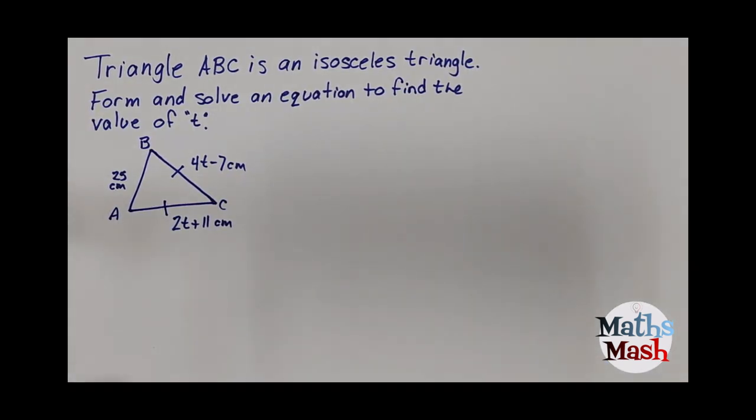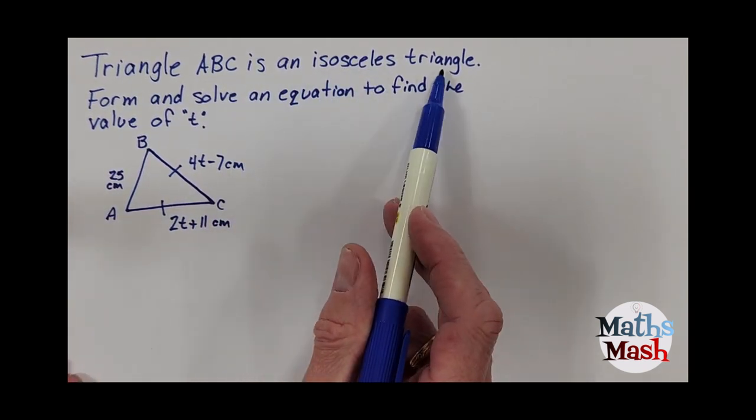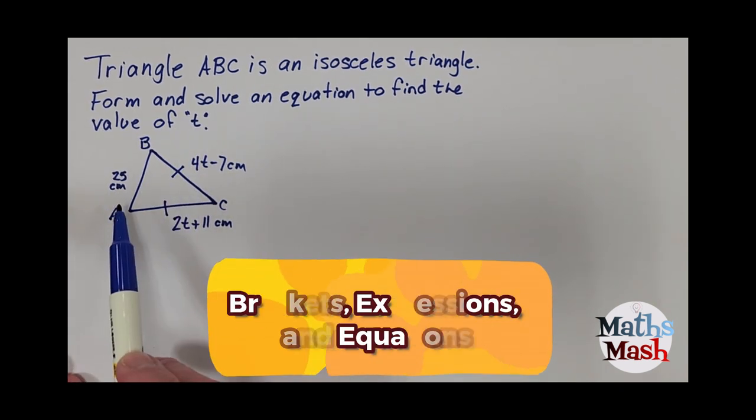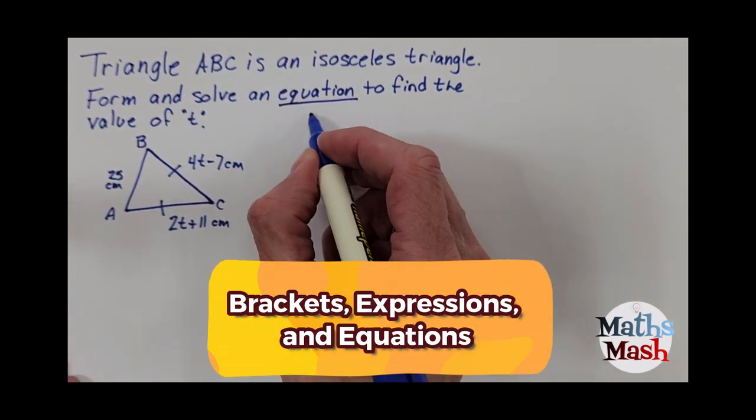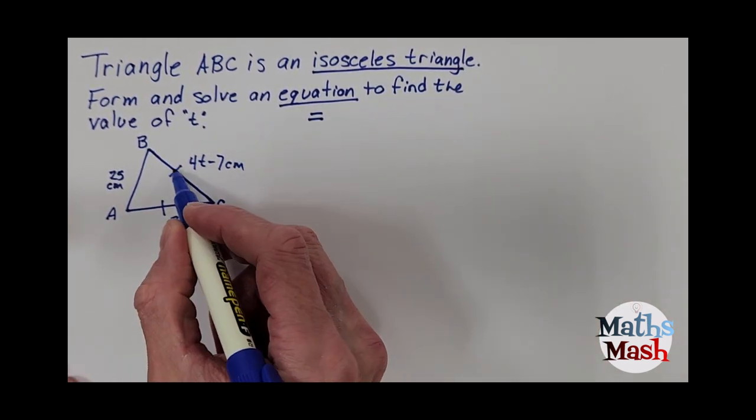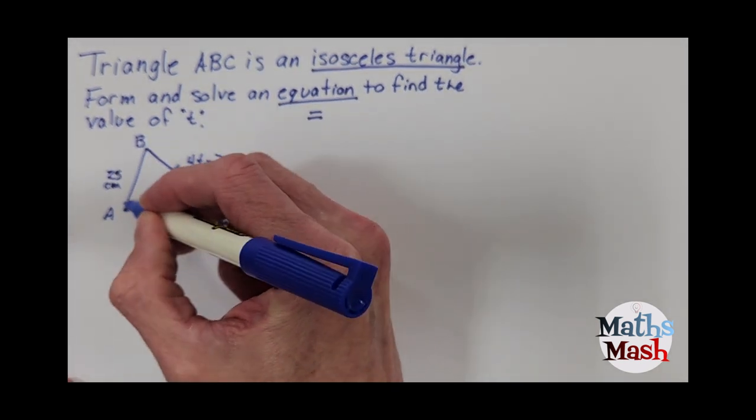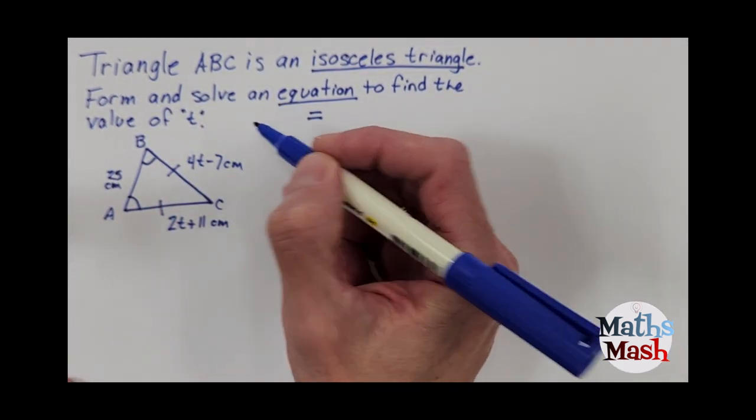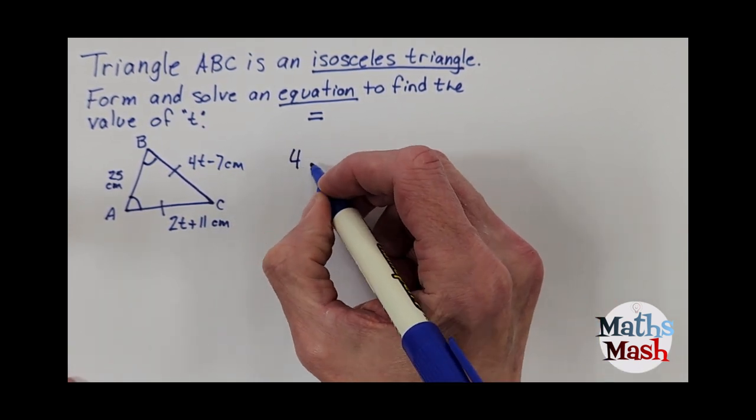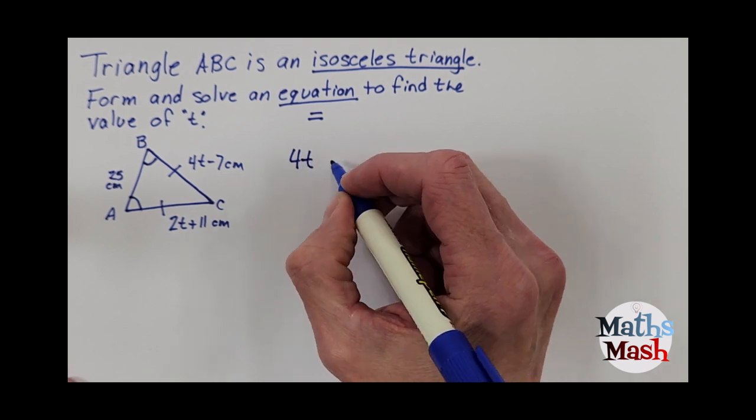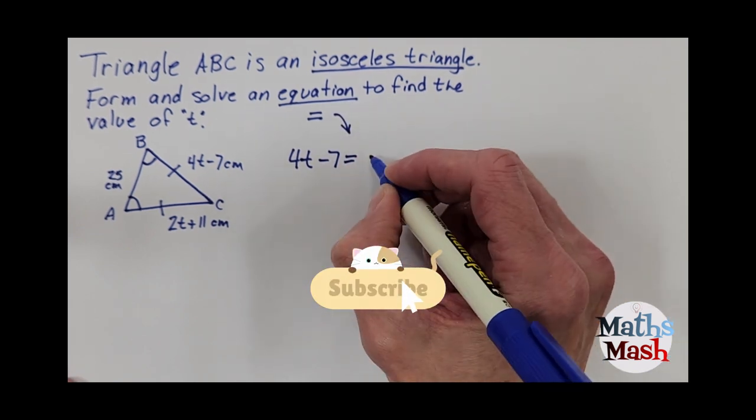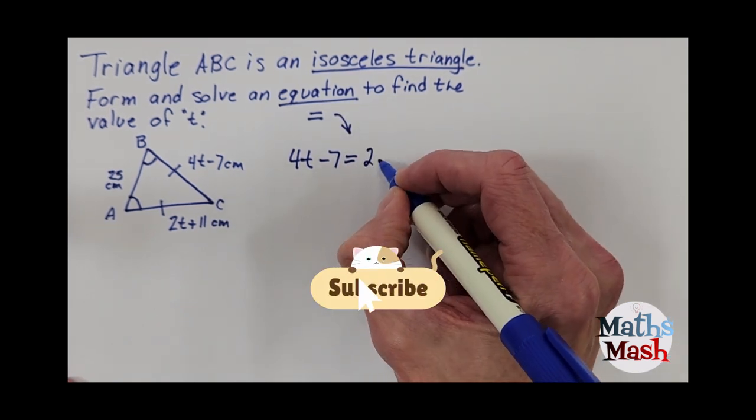This is my favorite one. Triangle ABC is an isosceles triangle. Form and solve an equation to find the value of t. Well, the first thing we know is that the word equation tells us that there's going to be an equal sign somewhere in our working out, and isosceles triangle says that the sides of these two lines means that those two sides are equal. Okay, so there you go. We've basically got our equation. We've got 4t minus 7 has to equal be the same as from our question here 2t plus 11.